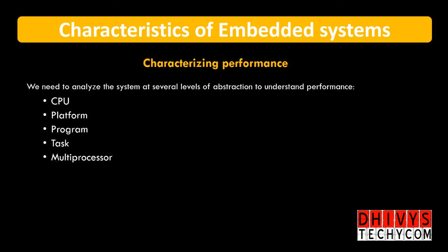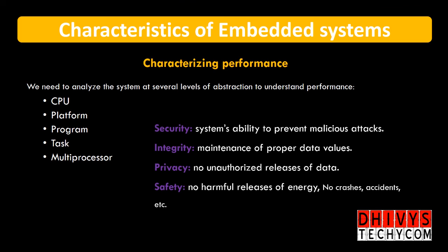Talking about characterizing performance — the CPU, the processor, how it looks and how it works is a major part. The platform on which it works, the OS, whether it is fast enough, the program, the task, and the microprocessor — these are the major parts measuring performance characteristics. The other part is security, integrity, privacy, and safety, which is attracting users on a very large scale. Security is highly demanded these days, and privacy and safety are also coming into the picture.